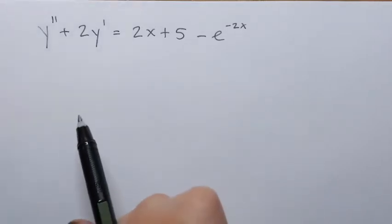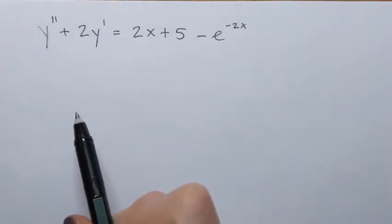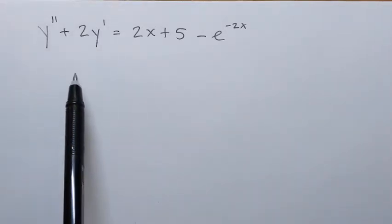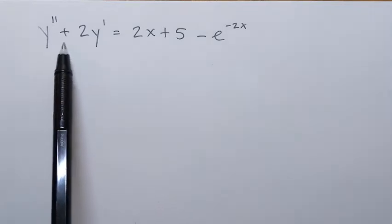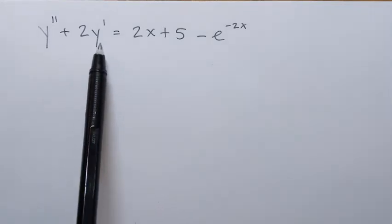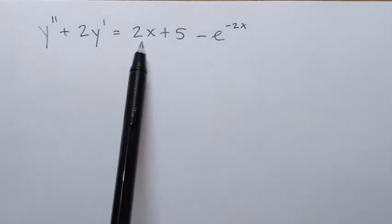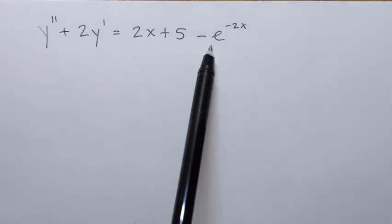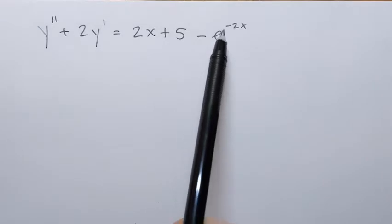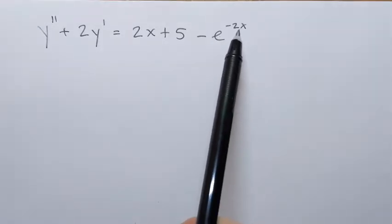We are going to solve the following non-homogeneous linear equation: y double prime plus 2y prime equals 2x plus 5 minus e to the power negative 2x.